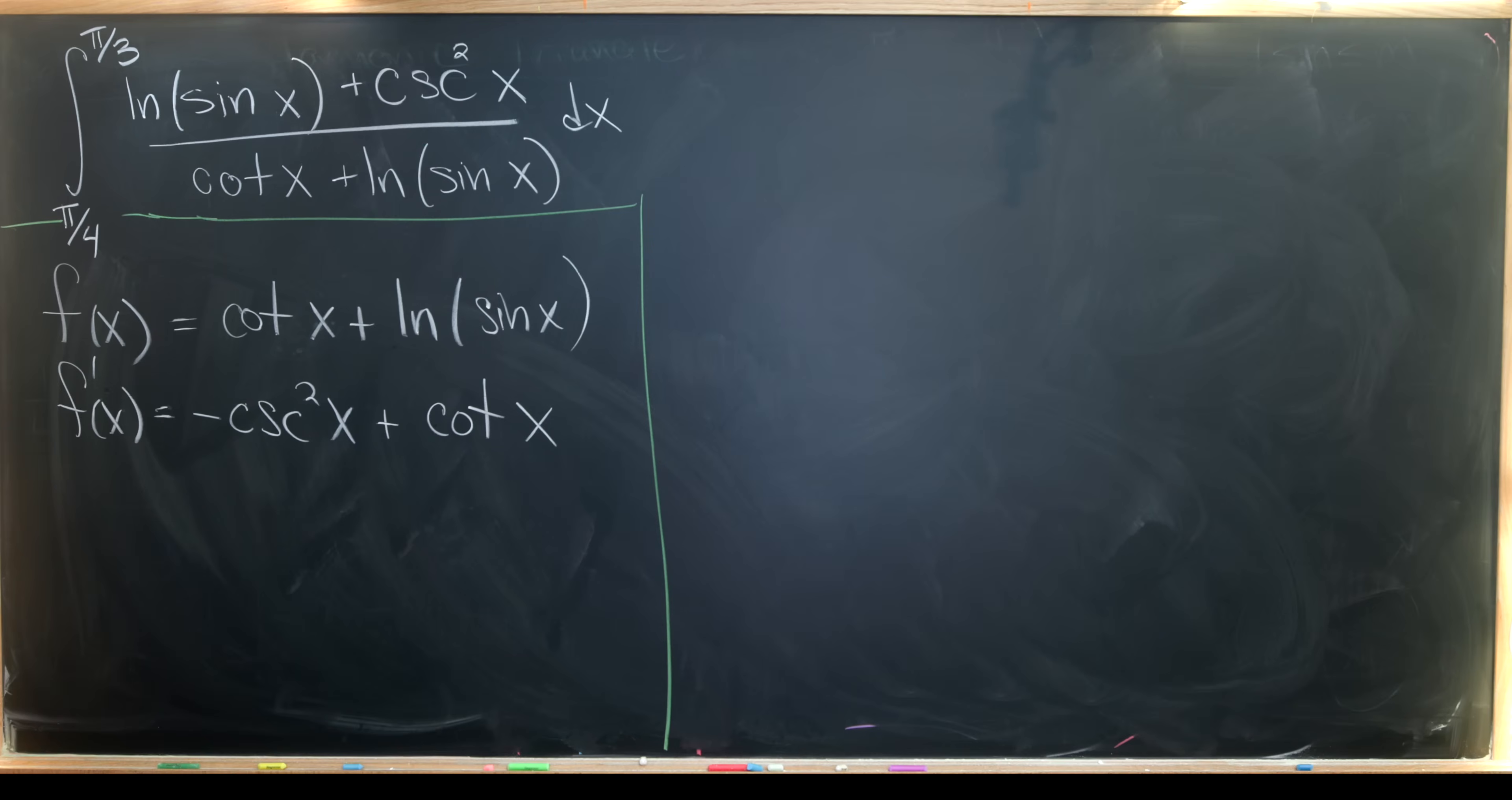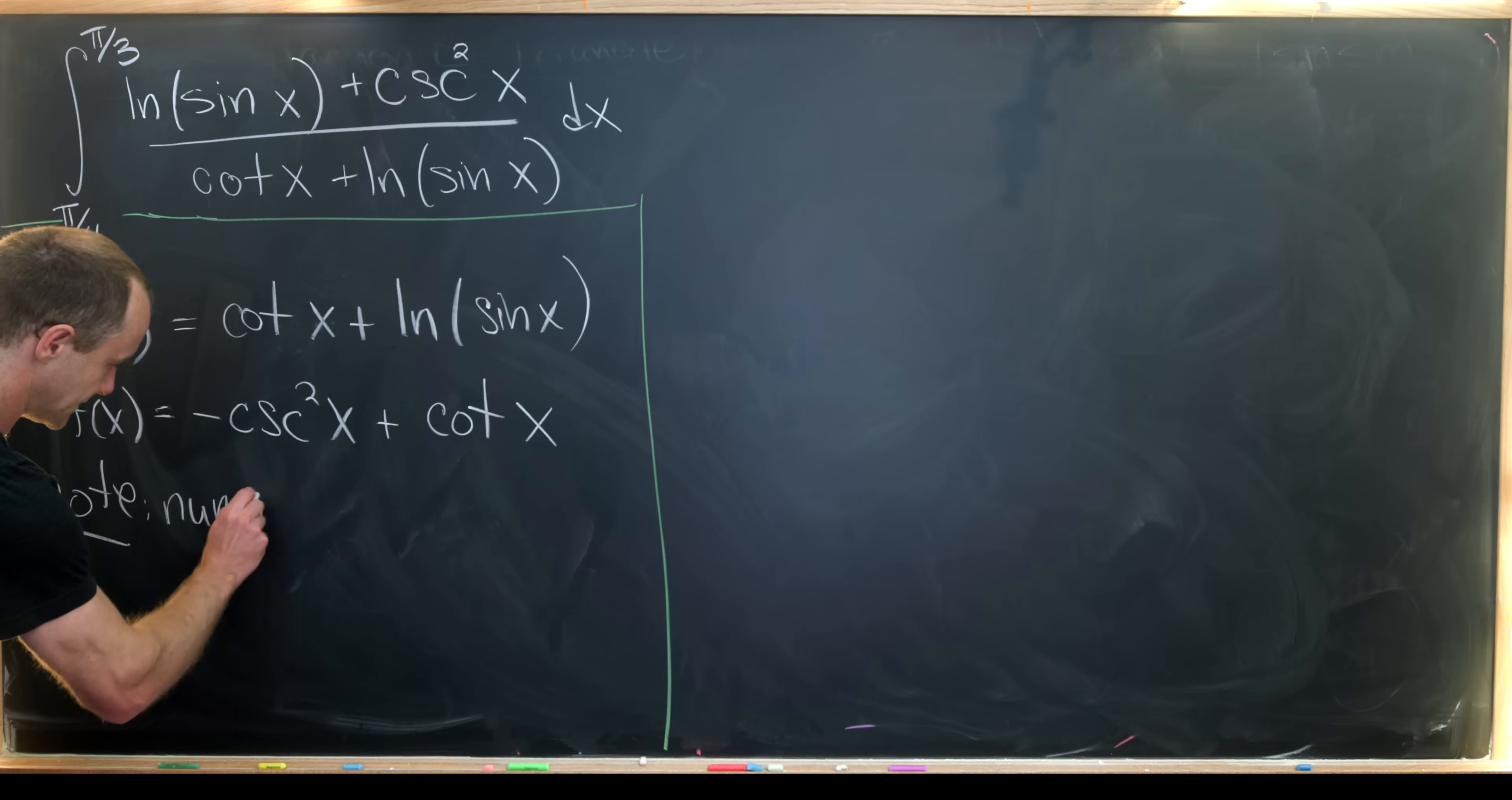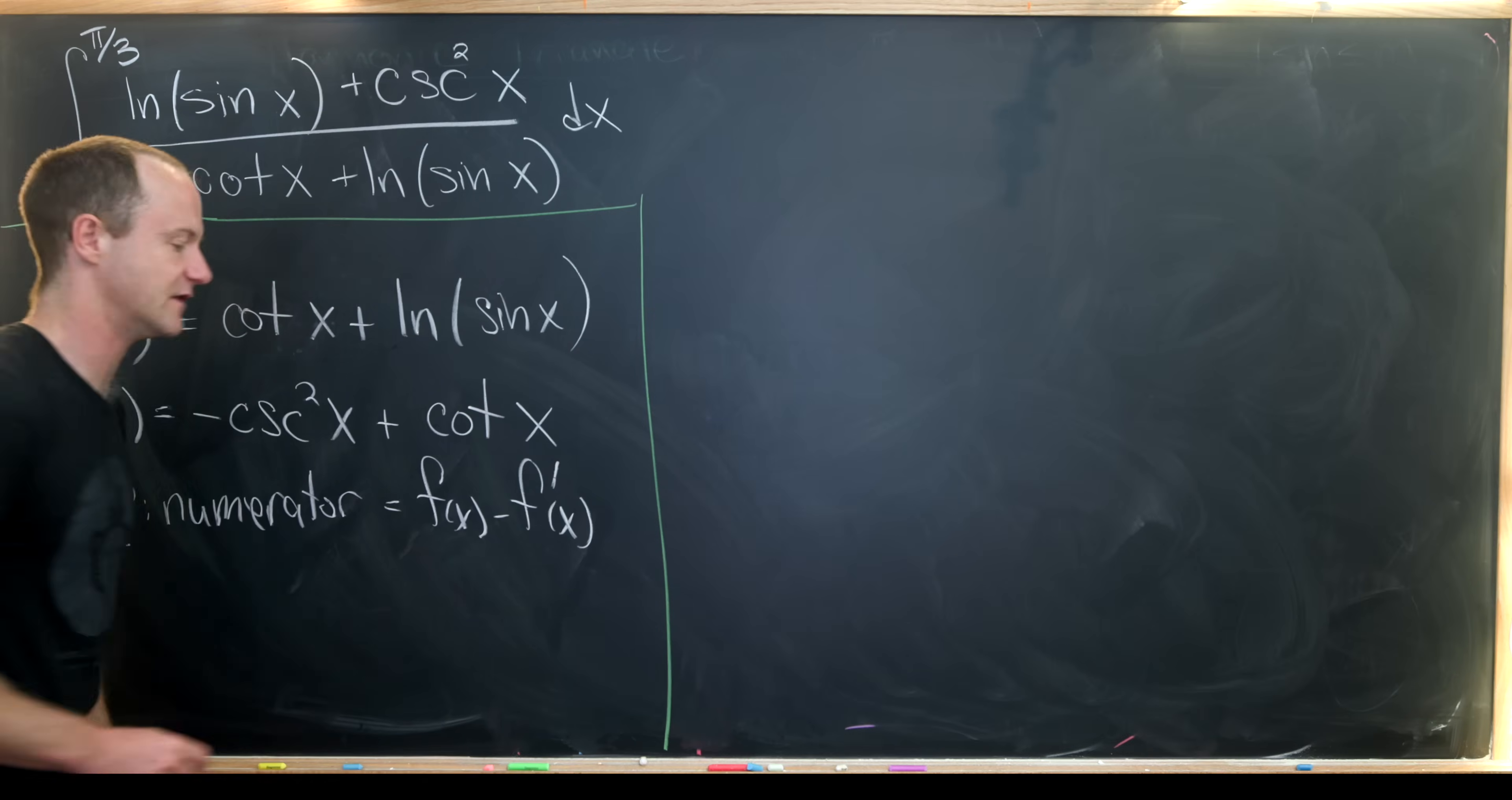Alright, so now we've got those two pieces kind of at the ready. Now can we somehow produce the numerator using these two pieces? And in fact, we can. Notice if we take f and we subtract f prime, we get the numerator. So let's make that little observation down here. So let's note that the numerator equals f of x minus f prime of x.